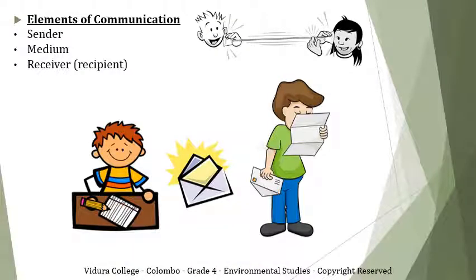Now we are going to learn the elements of communication. There are three: sender, medium, and receiver or recipient. The person who sends the message is called the sender. The way that he used to send the message is called the medium. The person who is getting the message is called the receiver or recipient.